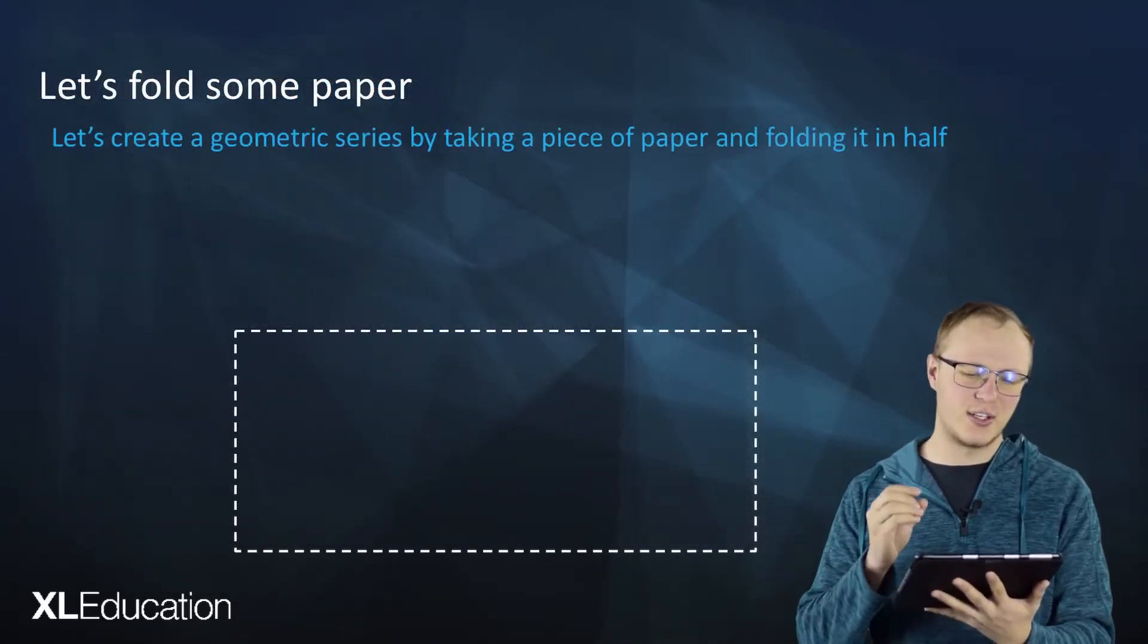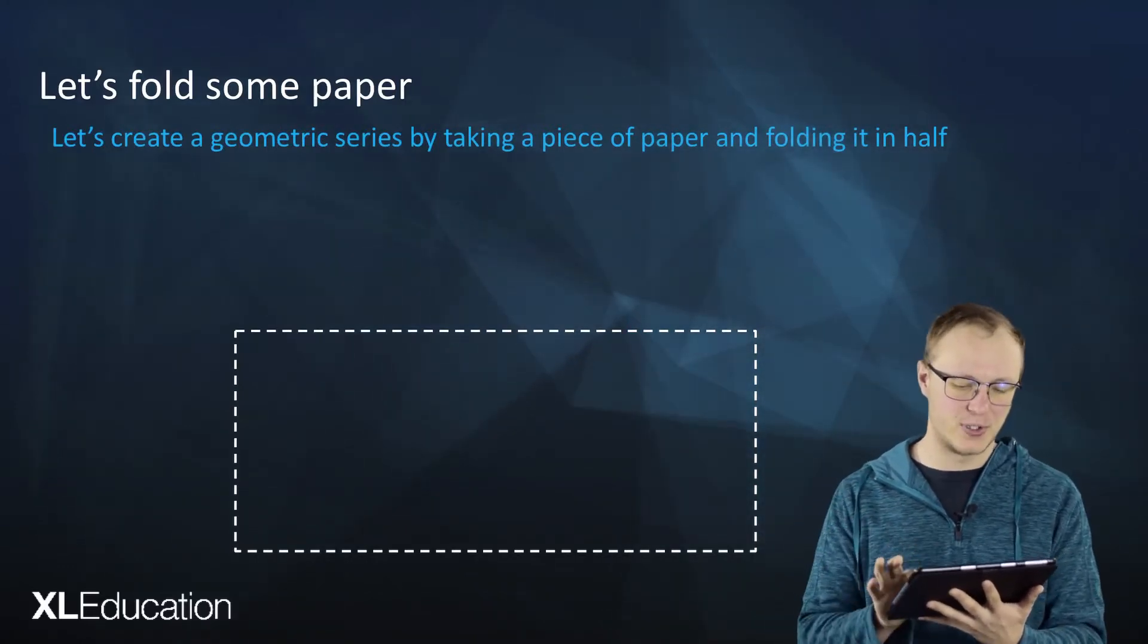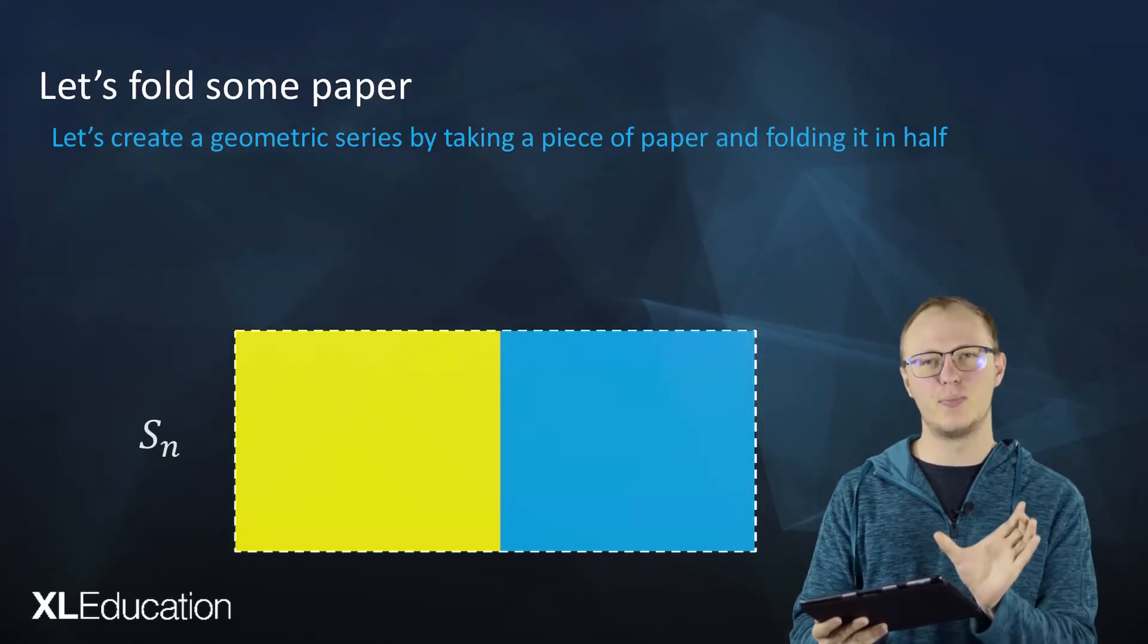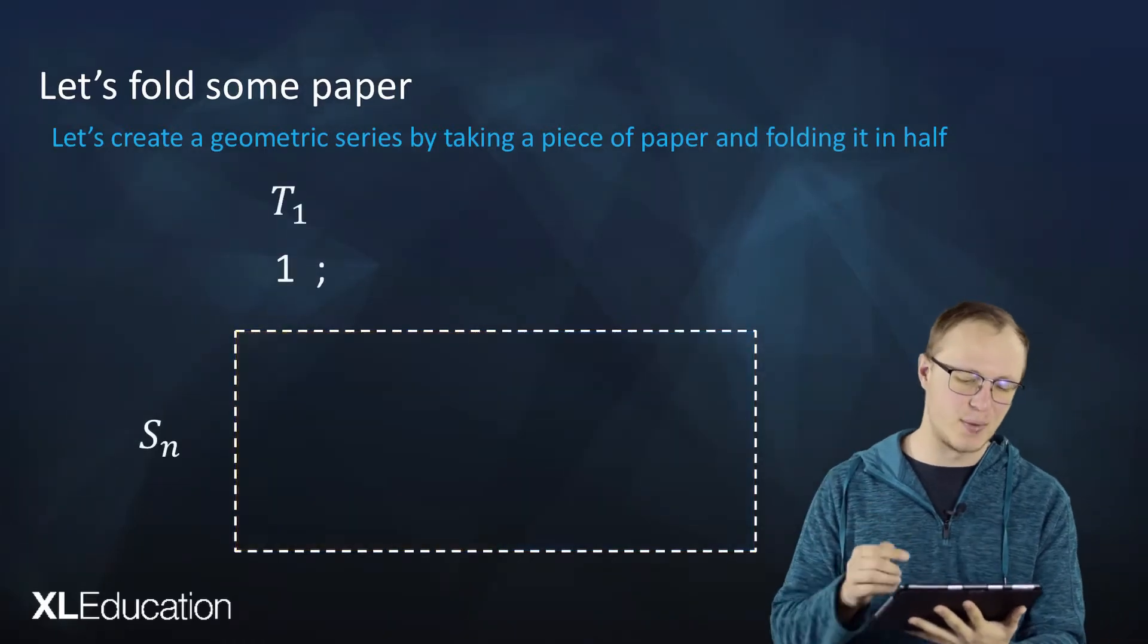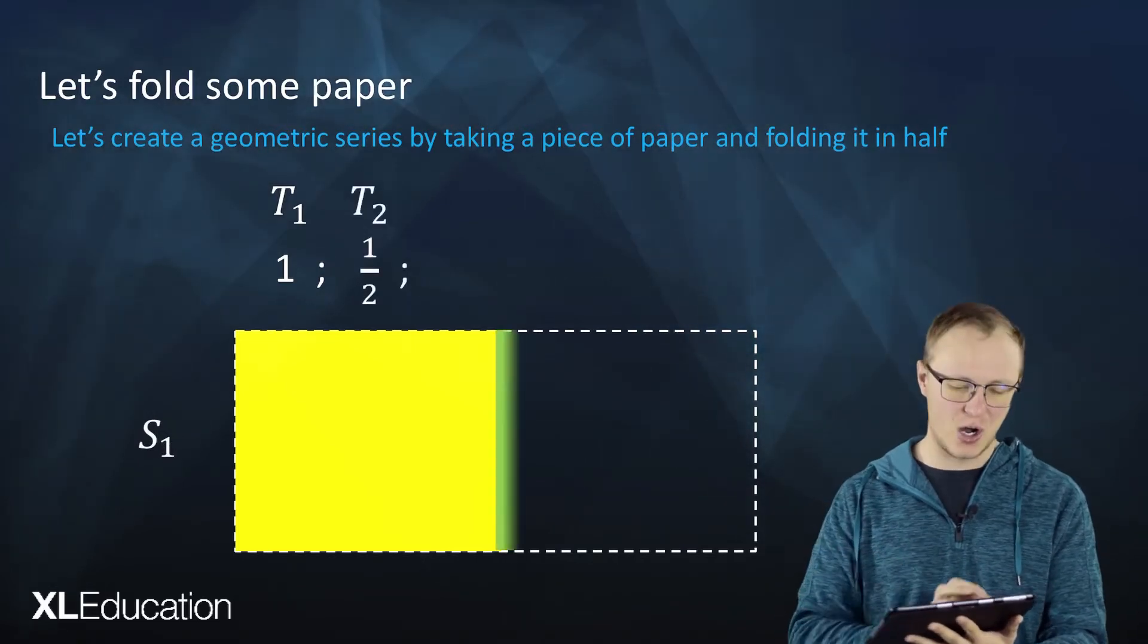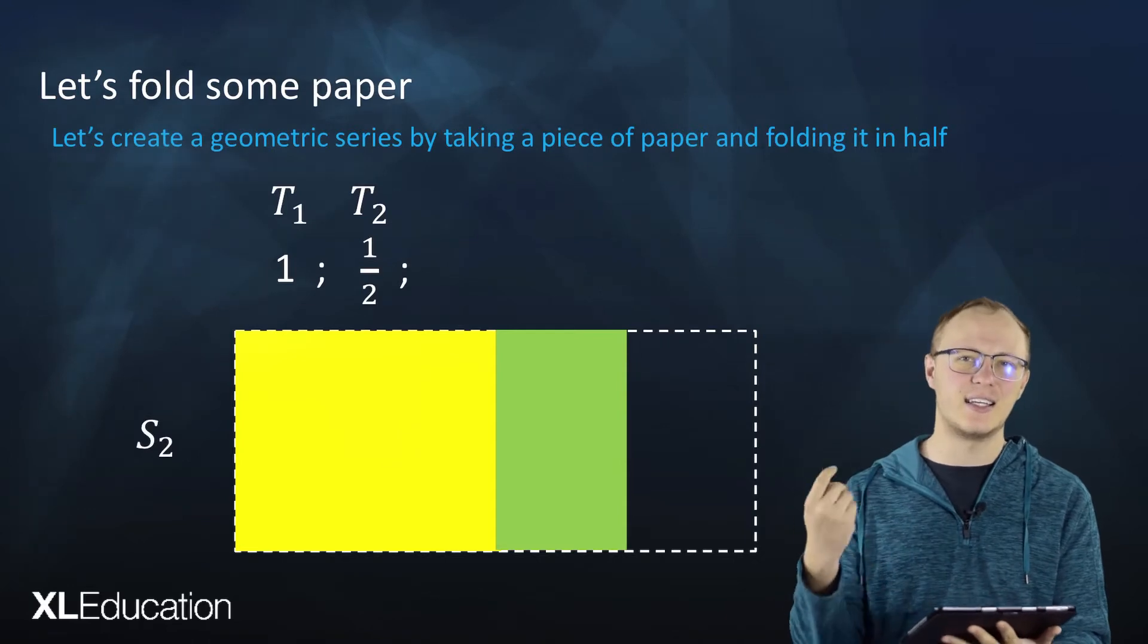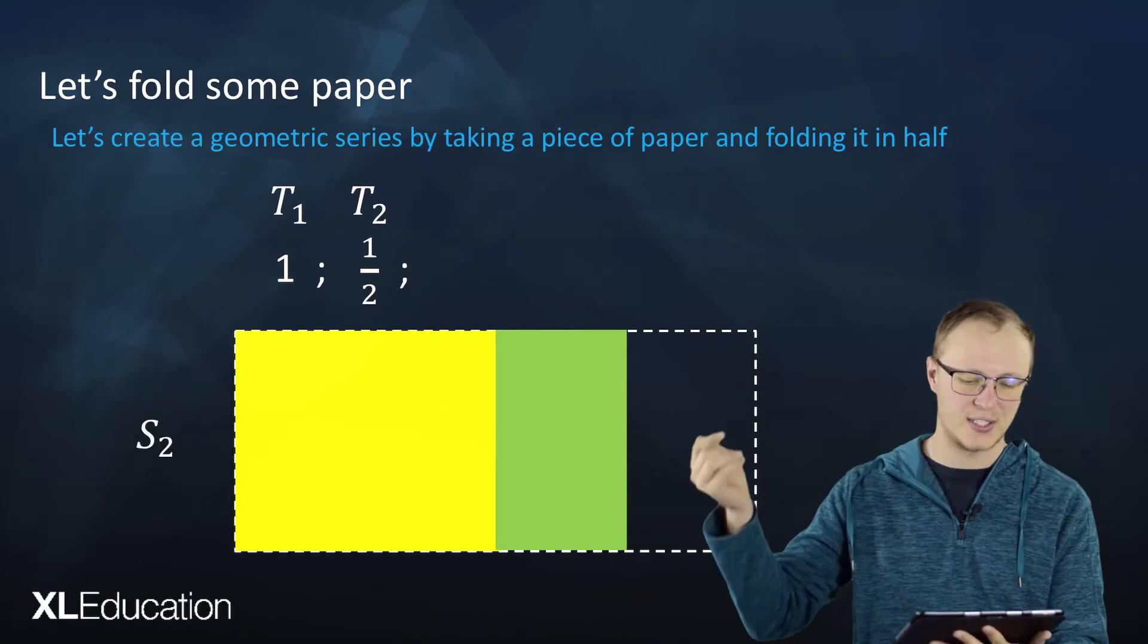We're going to create a geometric series by taking a piece of paper and folding it in half. What you see in front of you is a representation of two pieces of paper. That yellow bit represents one complete piece of paper, so the first term of our series is 1. The second term is half of that. We've added half to how much paper we have in total. Everything that's colored in is S2, the sum of the first two terms, 1 plus 1/2.